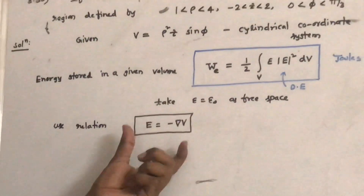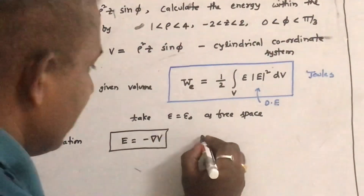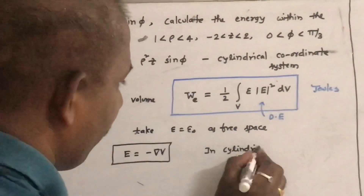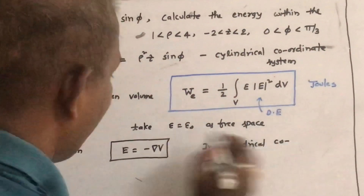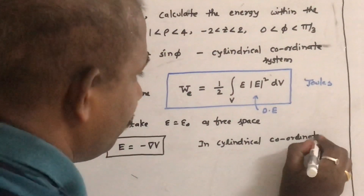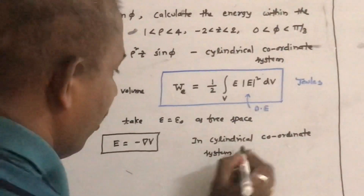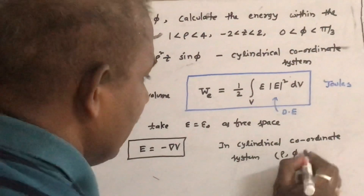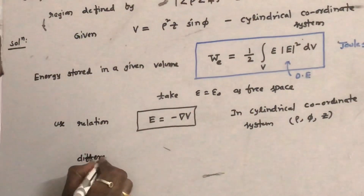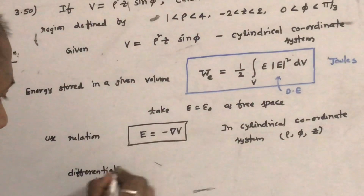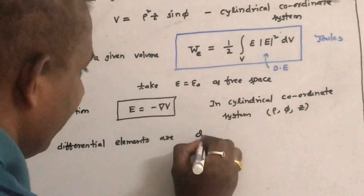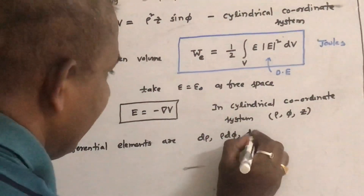We first find E from this relation. In cylindrical coordinate system, the variables are ρ, φ, and z. The differential elements are dρ, ρ dφ, and dz.